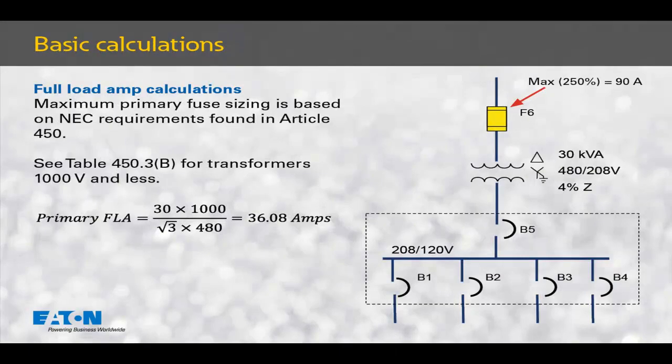The primary full-load amps of the transformer is needed to determine the maximum size fuse for transformer primary protection. The primary full-load amps is calculated as 36.08 amps at 480 volts. We use Table 450.3b of the National Electrical Code to determine the maximum fuse size for the primary main fuse, F6. The maximum size of the primary fuse is calculated by multiplying 36.08 amps by 2.5, giving us 90 amps as our maximum fuse size.